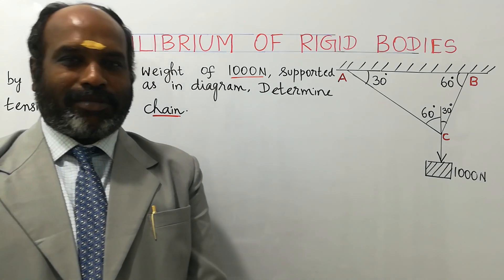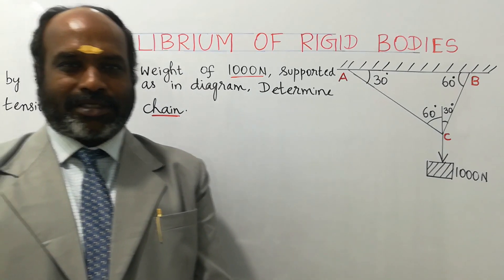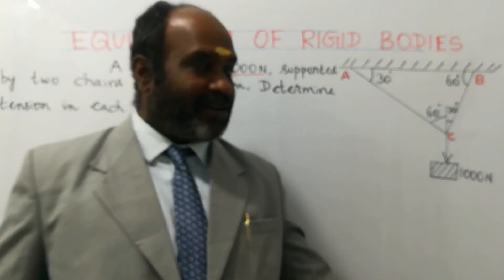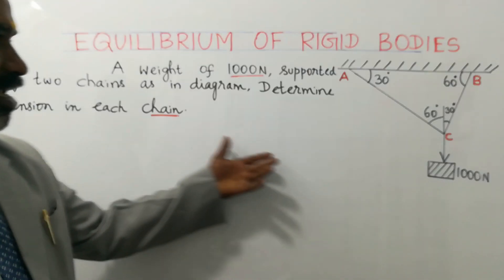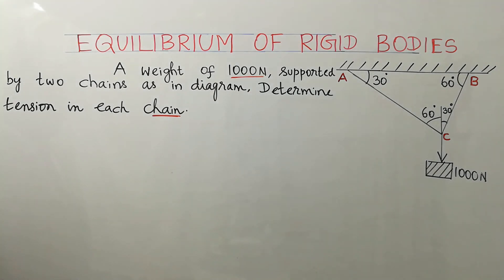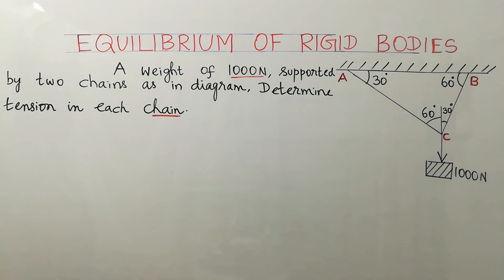Welcome to the topic: equilibrium of rigid bodies. The condition of the question is given like this — a weight of 1000 Newton supported by two chains as shown in the diagram. Determine the tension in each chain.